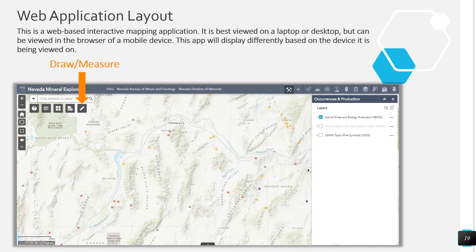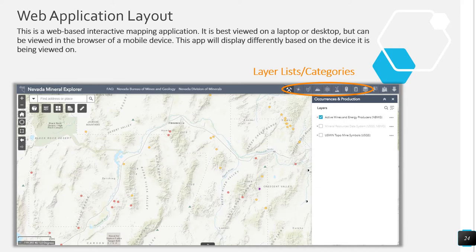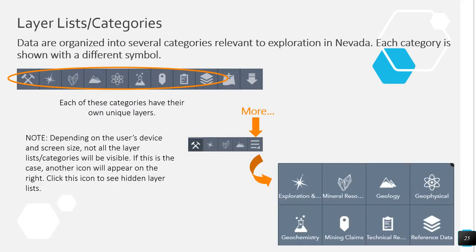You can draw or measure on the map with this tool, and you can use the search box to search a few select data sets. There is also a selection tool, an add data tool, and a download data tool. Layer lists and data categories are all located here. Data in this application are organized into nine different categories, each depicted with its own unique symbol, which we will go through shortly.